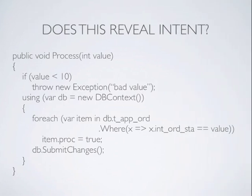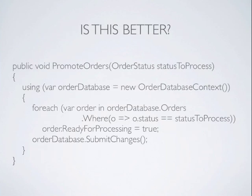So let's look at some intention-revealing names. Do the names here reveal the intent of what's going on in this code? Well, we're processing a value, and if the value is less than 10, then for whatever reason it's bad. Using some database — I don't know what — we're looking at what I guess is a table. Maybe the 'T' tells me it's a table. I'm not sure what 'app' tells me. And 'ord' — was it orders, ordinals, ordinances? I don't know. We're looking for some value that equals a value and setting something to true. The names don't actually tell us what's going on or why.